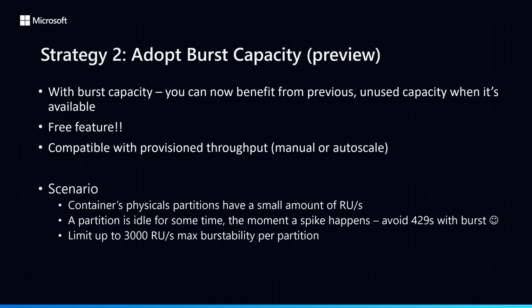In this next strategy, I want to talk about how you can adopt a new preview feature called burst capacity, which is a completely free feature that lets you use previously unused capacity that you already have to handle future spikes. This works with both manual and autoscale. The scenario we really want to address is: imagine you have a container whose physical partitions have a small amount of RUs on them. You may have workloads that are idle for some period of time, and today in Cosmos DB, the moment you try to use more than the RUs you have — whether manual or autoscale max — you immediately see 429s and get throttled. The fact that you never used the capacity in the past hour didn't really help you there.